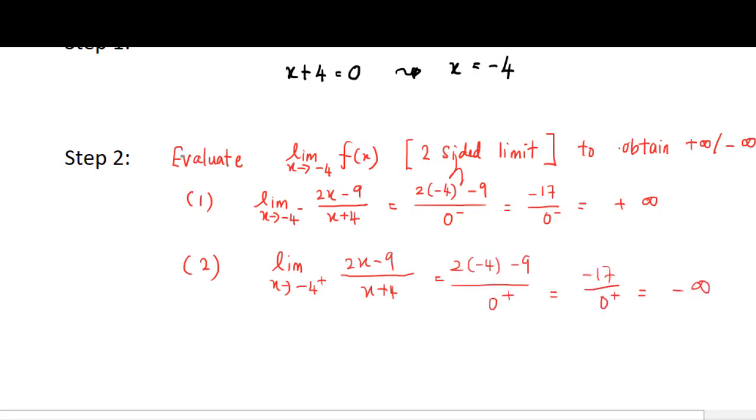So after we evaluate the limit, we need to draw a conclusion. Based on the definition, as long as we get the infinite limit, we can draw a conclusion, x equal to negative four is vertical asymptote.